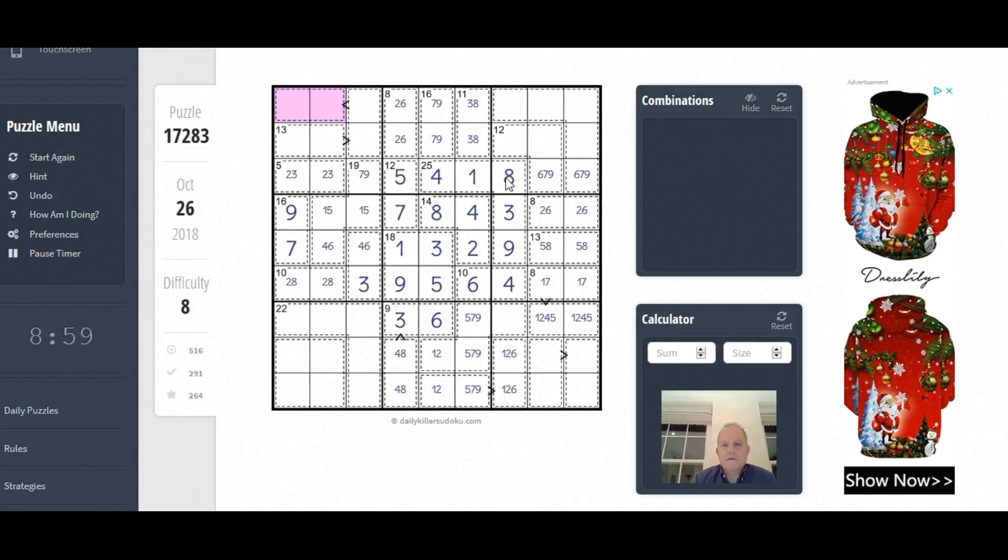Ah, 8's. Look, this 8 here means this isn't 8. So 8 here is in the bottom two rows. And 8 here is in the bottom two rows. So one of these is an 8. So this 22 contains an 8. That eliminates that combination.